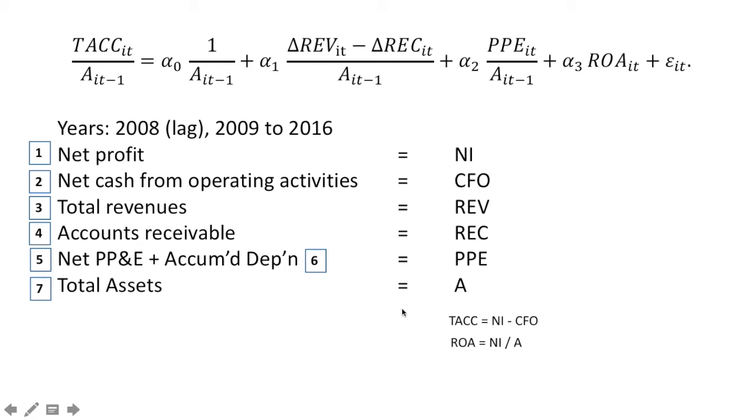We have total assets for A. Because we know that TACC is net income less cash flow from operations, we can simply calculate this by deducting CFO from NI in our software. Same with return on assets, which is net income divided by assets. These are all the data we need—there are seven variables, one through seven. Now let's move to the Excel file.